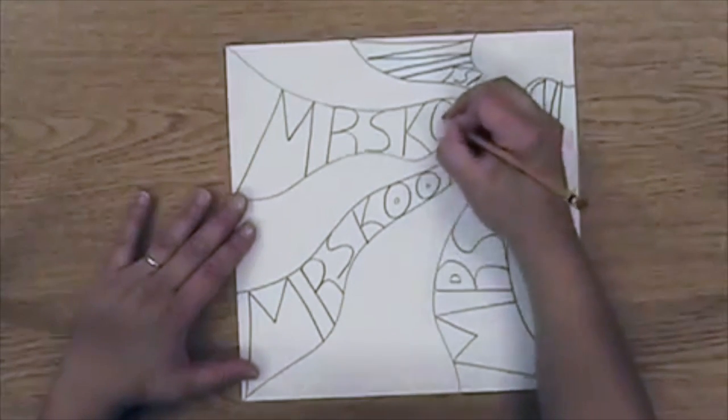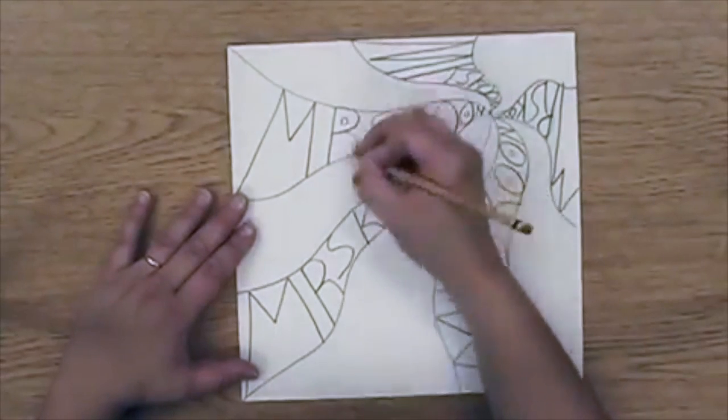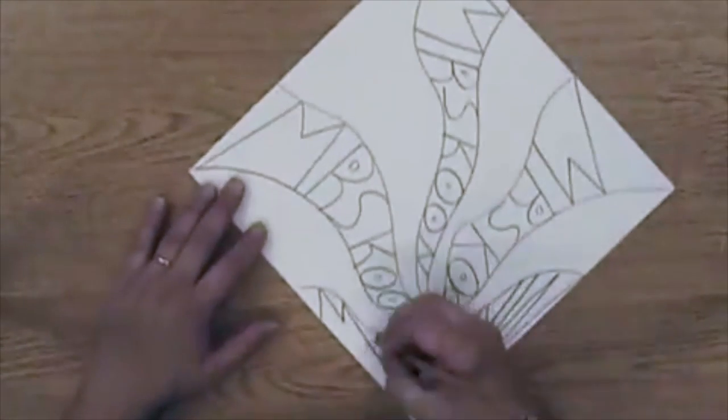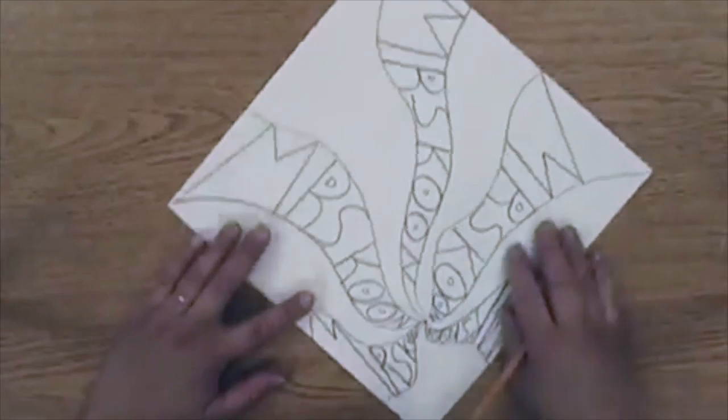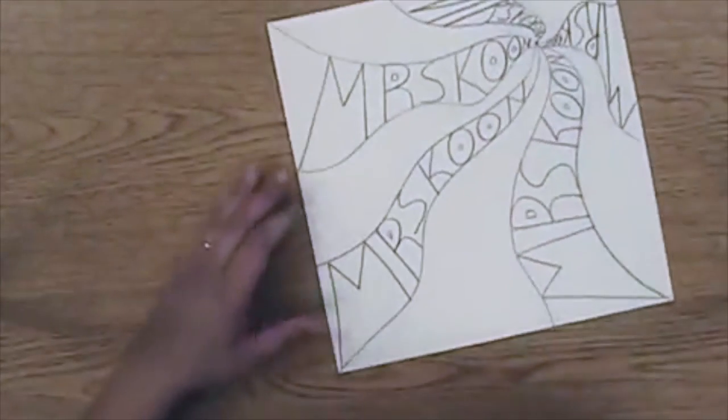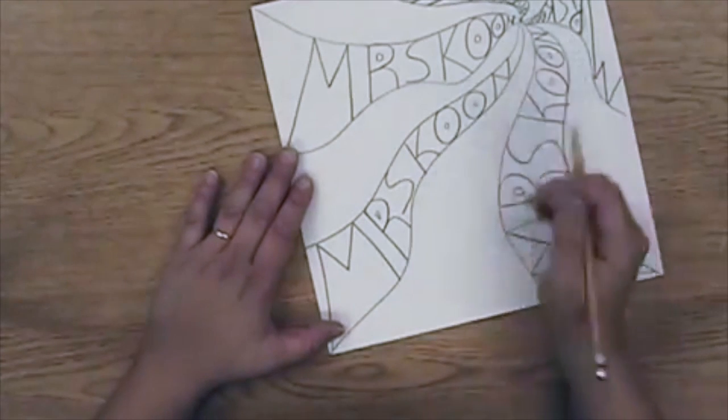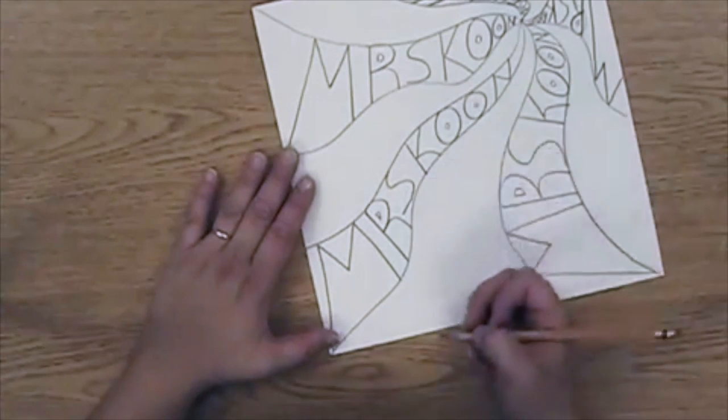I can go around and do that for all of my O's all at once or all of my D's all at once. It makes it a little easier for me, but you might want to do your whole name all at once and then go name to name. I'm just going to go through here now and do all of my letters into block.